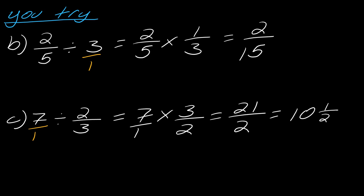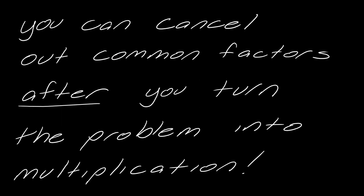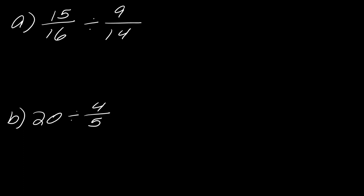So, okay. Now, just a note here. You can cancel out common factors, but you can only do this after you turn the problem into multiplication. So, here's some examples of what I mean by this. I've got 15 over 16 divided by 9 over 14.